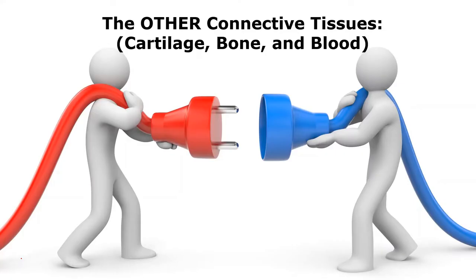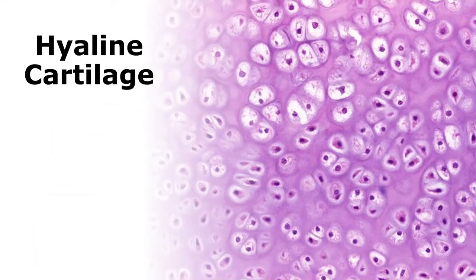We're going to look at the other connective tissues — the connective tissue that's not proper. This involves the cartilage, the bone, and the blood. The problem is people forget these are connective tissues because they're often talked about at the end of the story. So let's take a look first at hyaline cartilage.